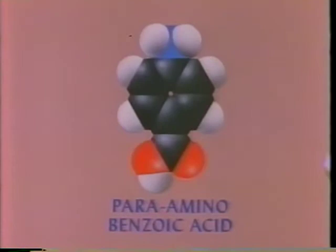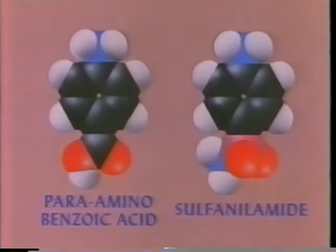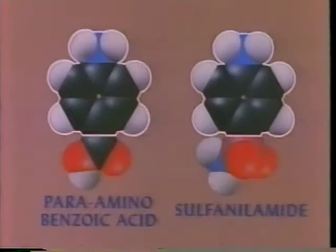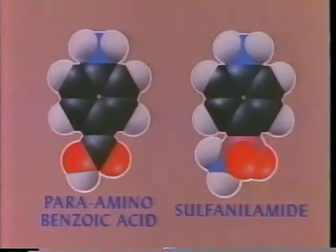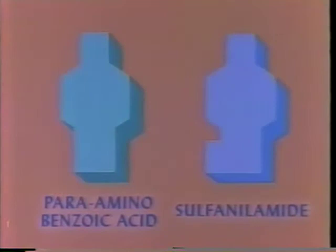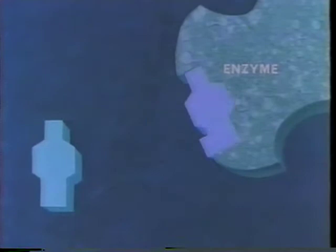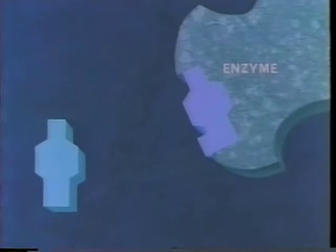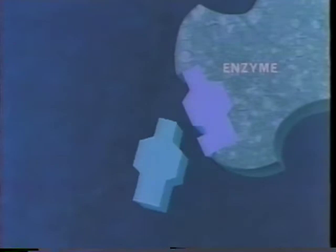Only then can the enzyme catalyze the further reactions necessary to cell life. When we examine the structure of the acid molecule and compare it to a molecule of the drug sulfanilamide, we find that they are much alike — this large portion of each is identical, the electron charge distribution in each molecule is also similar, and their general configurations are the same. The sulfanilamide, too, can react with the enzyme. But the sulfanilamide not only fails to activate the enzyme as a catalyst, it also prevents the acid from doing so. Thus metabolism stops, and the bacterial cell dies.